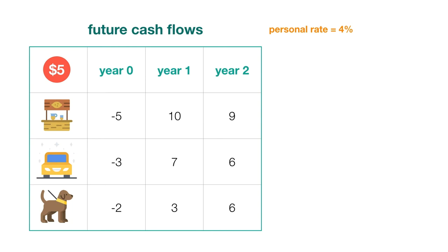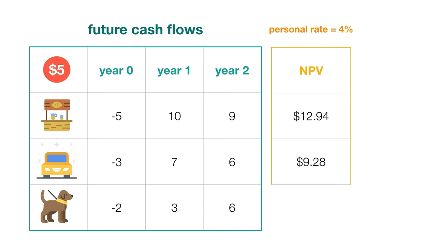Let's start this problem by discounting our future cash flows into present value terms. Because we are dealing with uneven cash flows, we can't use a shortcut like the annuity formula to discount these cash flows altogether. Next, let's add these discounted cash flows and subtract the initial costs. This gives us a net present value of $12.94 for the lemonade stand, $9.28 for the car wash, and $6.43 for the dog walking.